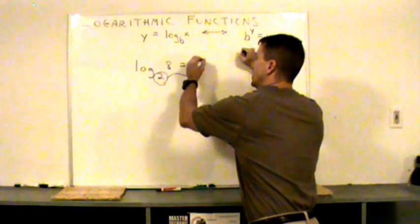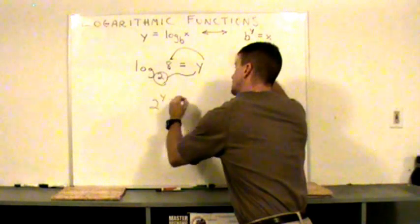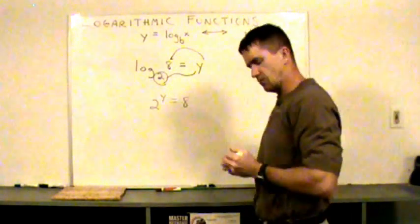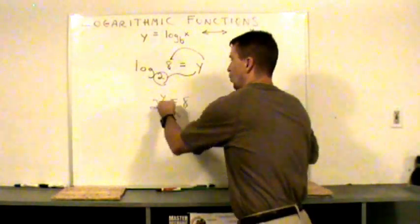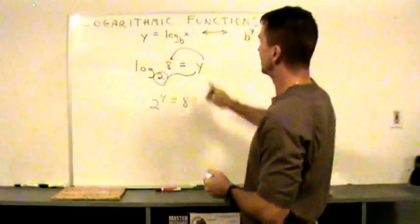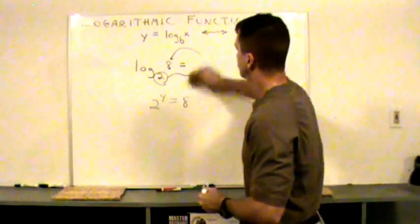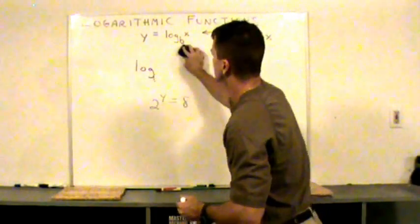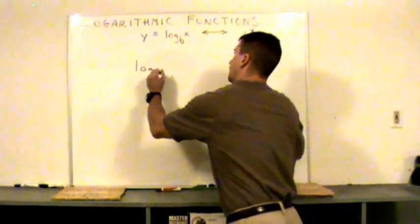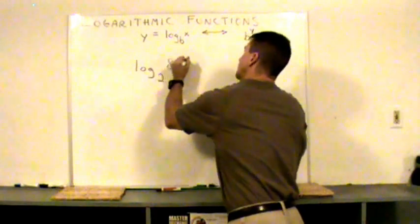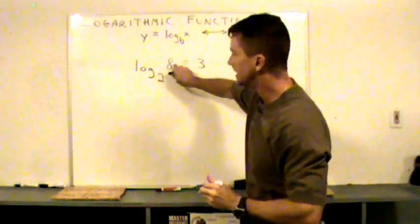Well, according to this definition, two raised to this power right here must be equal to eight. I'm gonna write that down. Two to the y must equal eight. And I want two to the third power is eight. So y is a three. So what we're saying is log base two of eight is the number three.